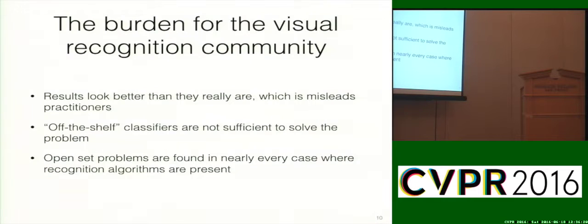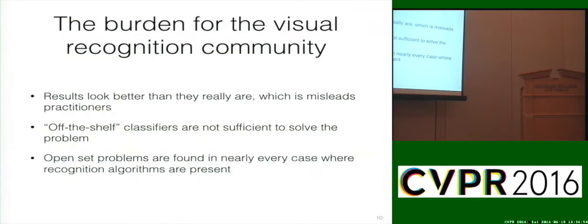The burden for the visual recognition community: results look better than they really are in many cases. You read the paper, results look great on the benchmark data set. You re-implement the algorithm, move it to a new domain or different data, and lo and behold, the performance is not what you expected based on the claims of the paper. A lot of what you're seeing may be some effect induced by the open set recognition problem.